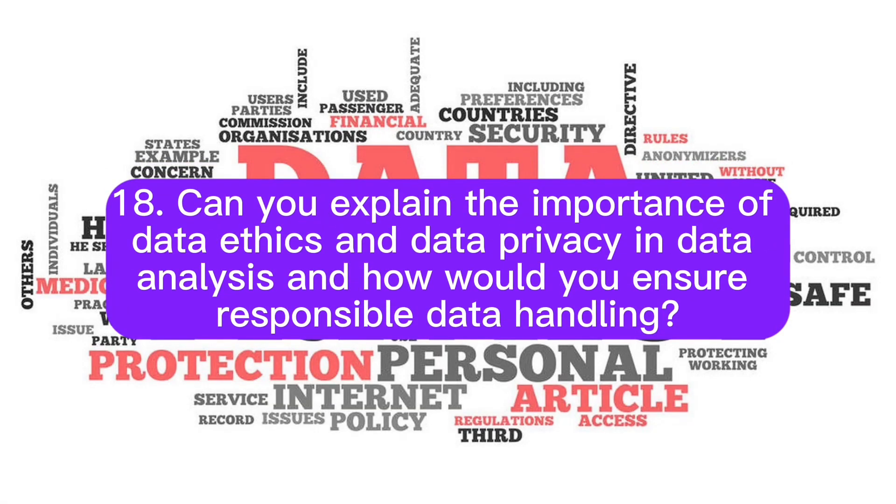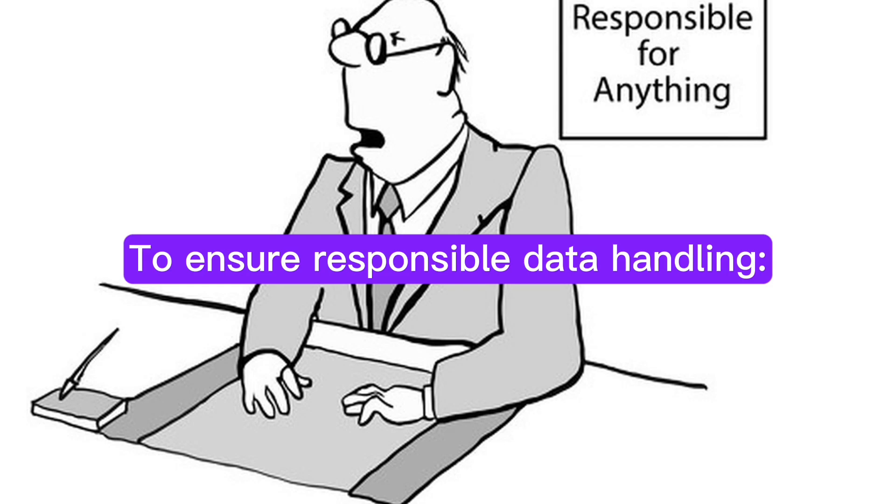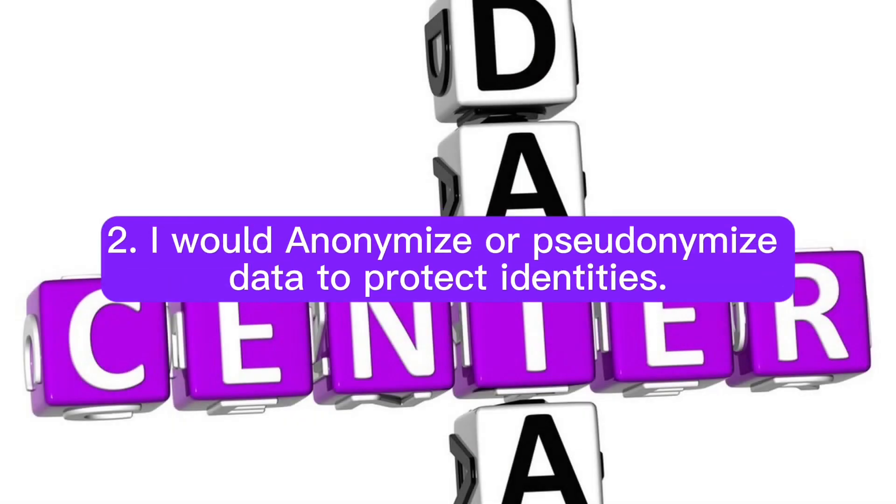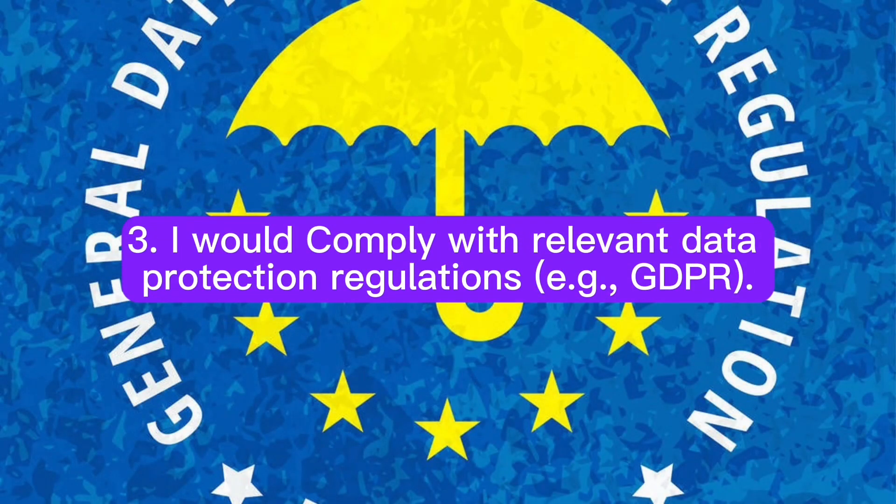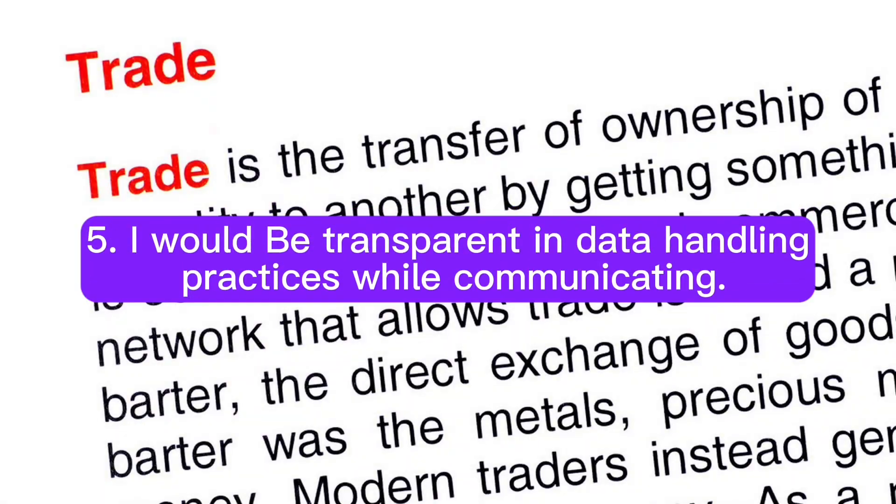Question 18: Can you explain the importance of data ethics and data privacy in data analysis? And how would you ensure responsible data handling? Answer: Data ethics and privacy are crucial in data analysis to protect individual sensitive information and ensure ethical data usage. To ensure responsible data handling: first, I would obtain proper consent for data collection; second, I would anonymize or pseudonymize data to protect identities; third, I would comply with relevant data protection regulations, for example GDPR; fourth, I would limit access to data to authorized personnel; and fifth, I would be transparent in data handling practices while communicating.